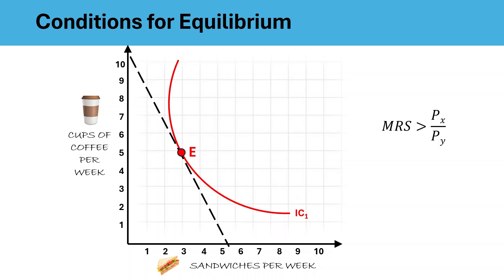Or if we take the other case that MRS is less than price ratio, it means the consumer values X less than the market does. They will buy less of X, which is sandwiches, and more of Y. This will raise the MRS and again it moves towards the price ratio. So basically the consumer adjusts their combination until their own trade-off rate matches the market's trade-off rate. So this is where we are understanding our first condition of equilibrium that MRS should be equal to PX upon PY.